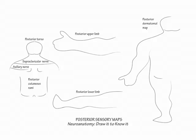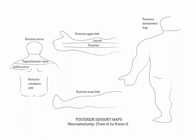Show the lateral cutaneous nerves of the forearm and arm cover the lateral posterior upper extremity, and the posterior cutaneous nerve of the forearm and arm covers the midline posterior upper extremity. The radial nerve supplies both the lateral and posterior nerve groups, except for the lateral cutaneous nerve to the forearm, which the musculocutaneous nerve supplies. Then label the medial posterior upper arm with the medial cutaneous nerves of the forearm and arm.